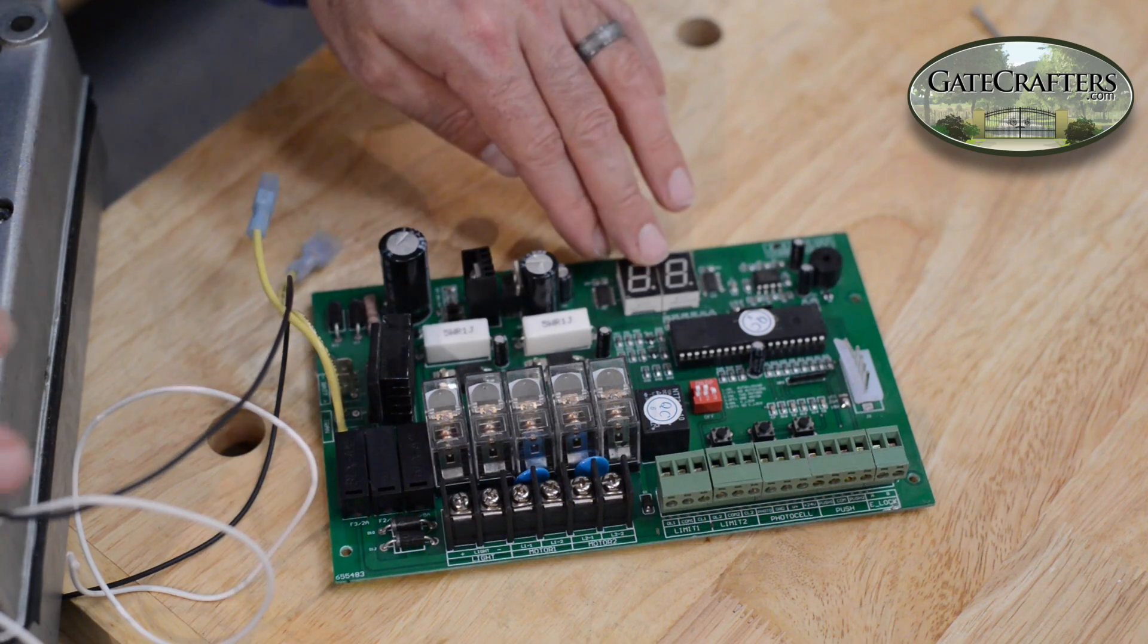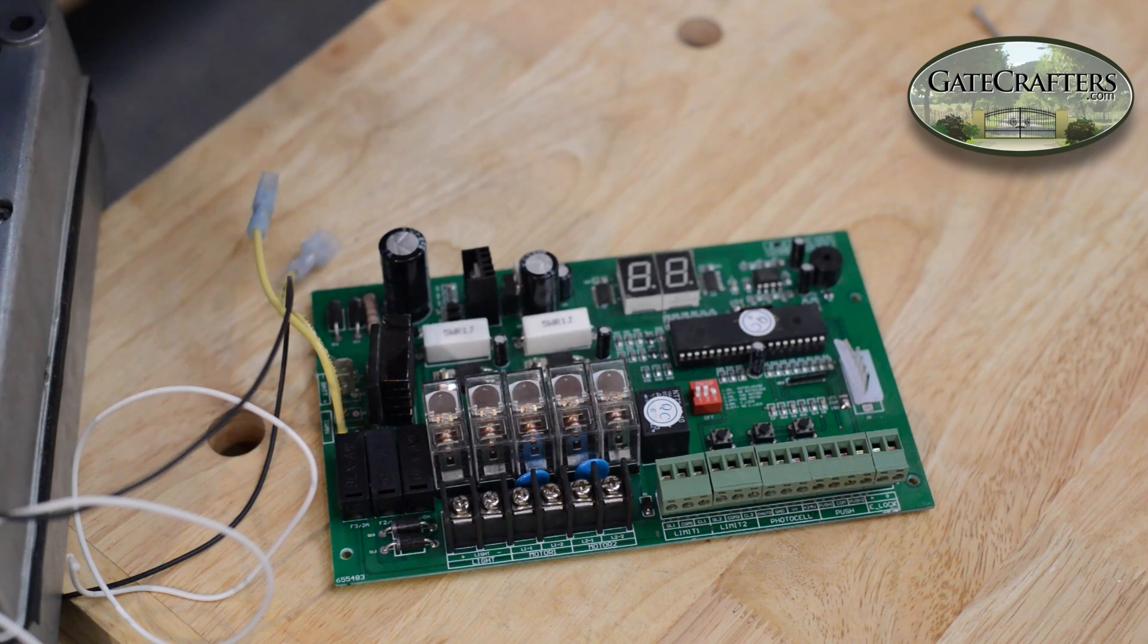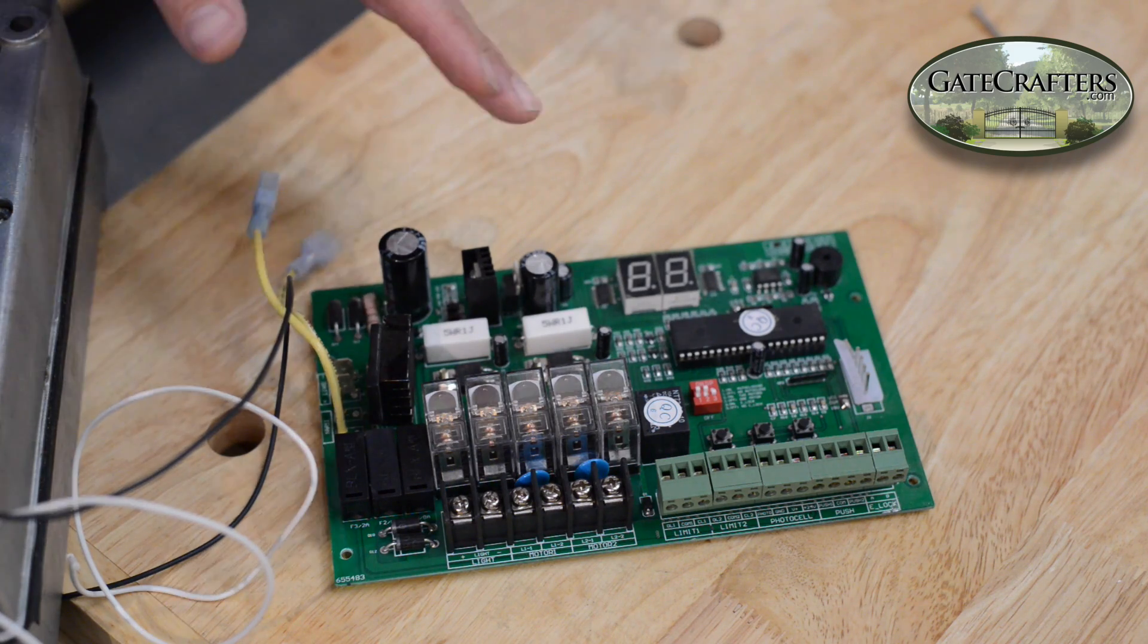So only change these if that occurs. Once you have them changed and the display is showing OP and the gate is going open when it shows OP, we're all set as far as wiring the operator arms.